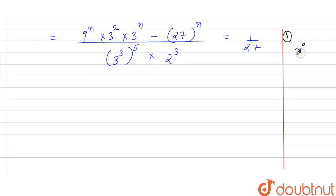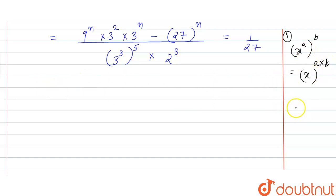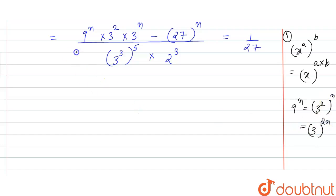We have the property that x raised to power a, whole power b, is equal to x raised to power a into b — the powers will be multiplied. Using this, we write 9^n as 3 squared whole power n, which becomes 3 raised to power 2n.